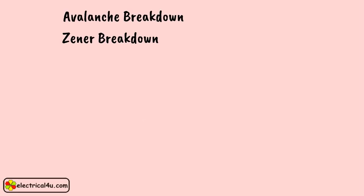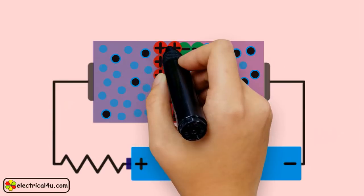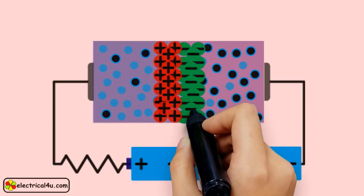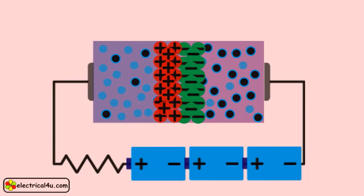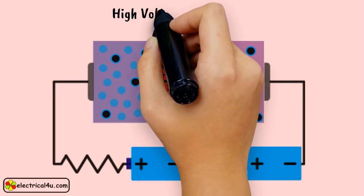When a PN junction diode is highly doped, the concentration of impurity atoms will be high in the crystal. This higher concentration of impurity atoms causes a higher concentration of ions in the depletion layer. Hence, for the same applied reverse biased voltage, the width of the depletion layer becomes thinner than that in a normally doped diode.